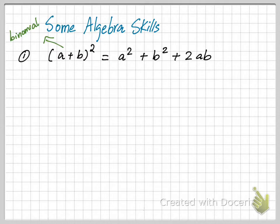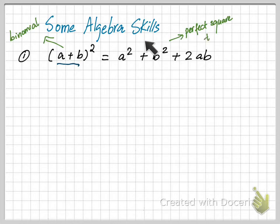So if you have a binomial a plus b and you square it, you get a squared plus b squared plus 2ab. This is called a perfect square binomial. Do not forget the 2 times a times b — most people forget this term.